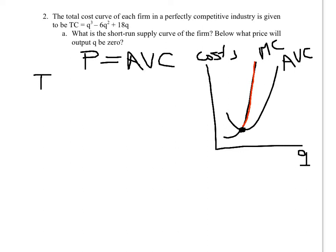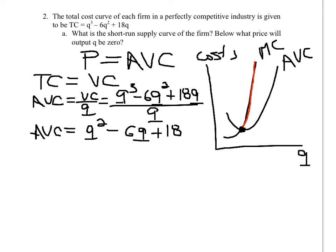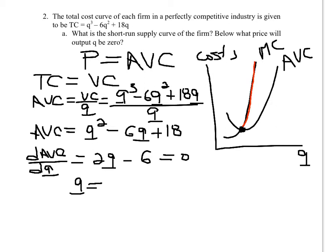Since total cost equals variable cost here, we divide by output to get AVC. So AVC = (Q³ - 6Q² + 18Q) / Q = Q² - 6Q + 18. That's the U-shaped AVC curve. To find its lowest point, take the derivative: 2Q - 6, and set it equal to zero, giving Q = 3.